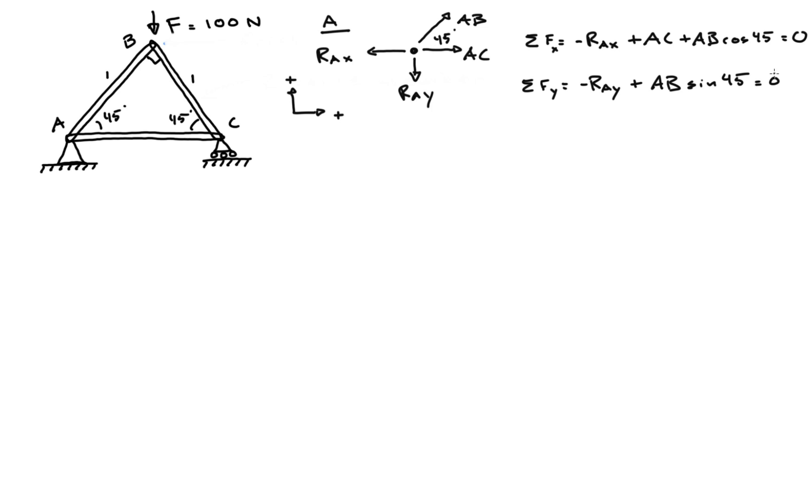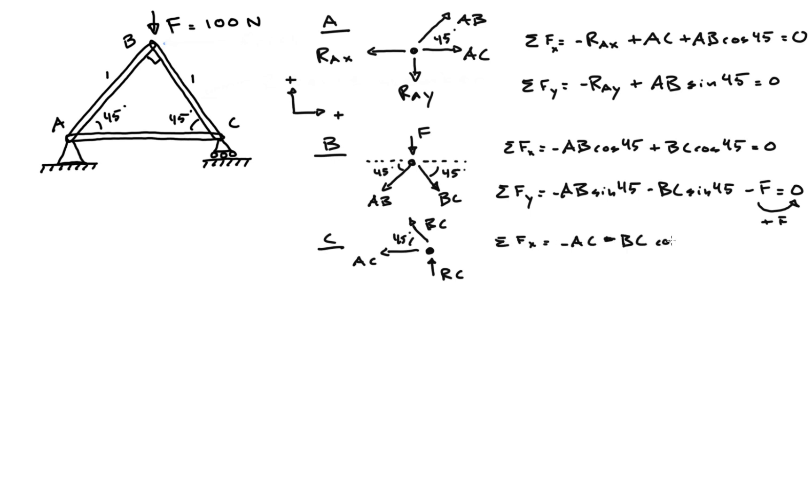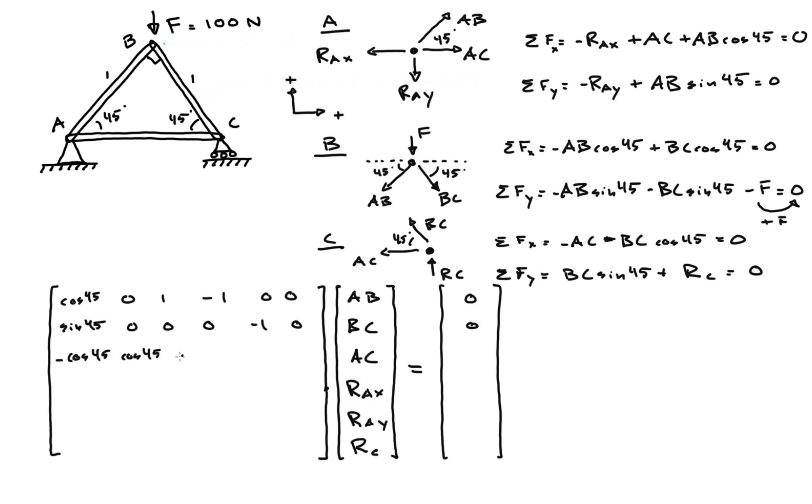Performing a force balance at point A yields two equations that we can use to analyze the truss. Applying this method to all three of the joints yields six equations. Then, just as before, we can build the matrix equation by first defining our unknowns matrix X, and then building the A matrix and B vector row by row.